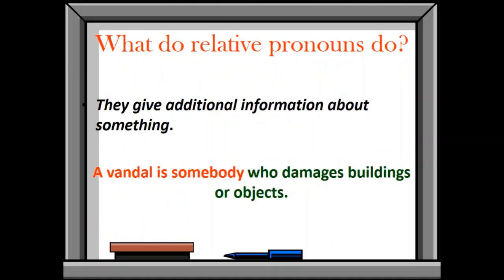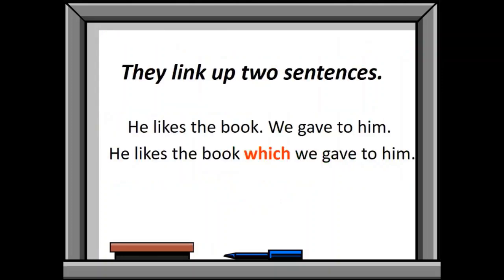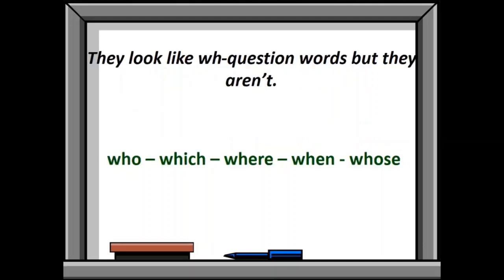What do these relative pronouns do? They give additional information about something. For example, a vandal is somebody who damages building or objects. Here it is giving us information about the vandal: what does he do? Linking up two sentences. He likes the book. One sentence. We gave to him two sentences. If we want to convert it in one sentence, it will be like: He likes the book which we gave to him. So here relative pronoun is linking two sentences. They look like WH question words but they aren't.